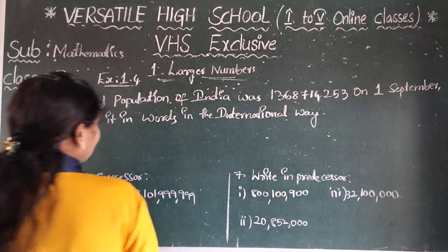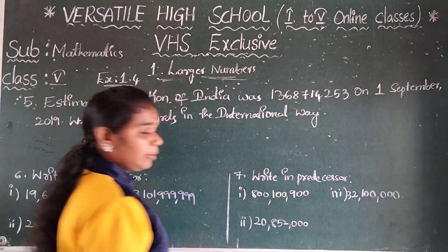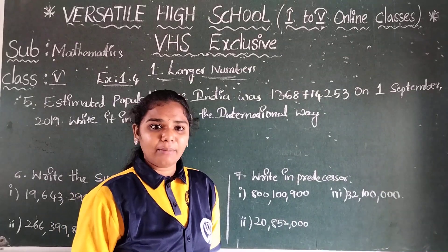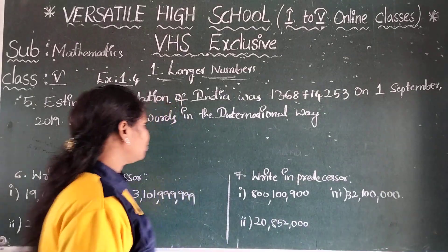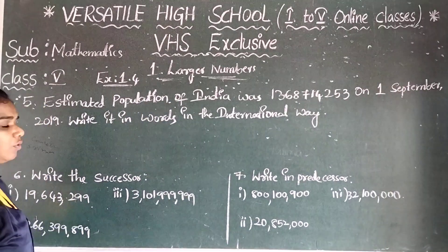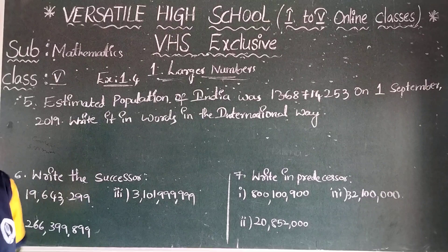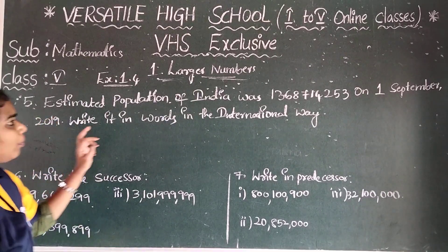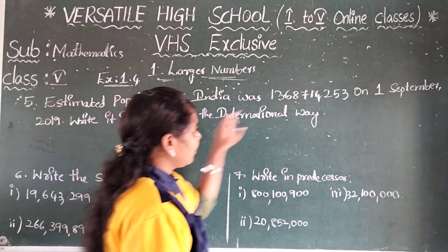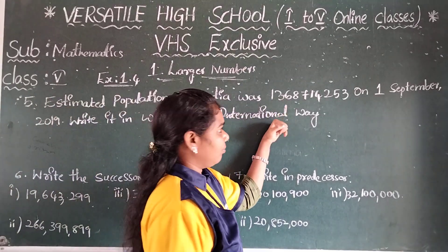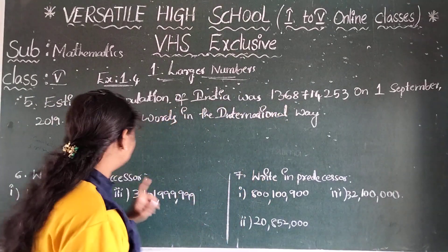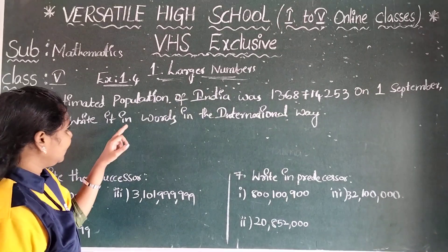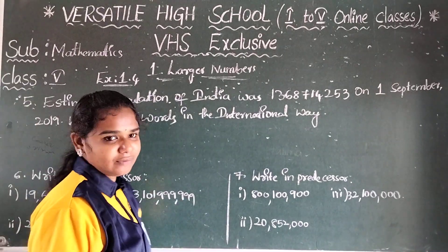So what is the question about larger numbers? In the previous class we discussed exercise 1.4. Four bits are completed. Now today we discuss the fifth bit. The fifth question is about the estimated population of India on 1st September 2019. Write it in words in an international way.